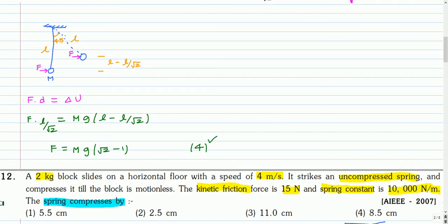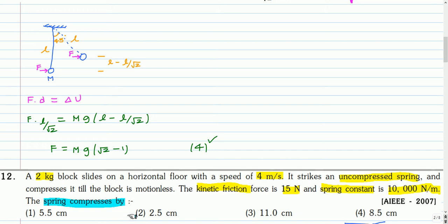This is the next question. A 2 kg block slides on a horizontal floor with a speed of 4 meters per second. It strikes an uncompressed spring and compresses it until the block is motionless. The kinetic friction force is 15 N and the spring constant is 10,000 N/m. By how much does the spring compress?